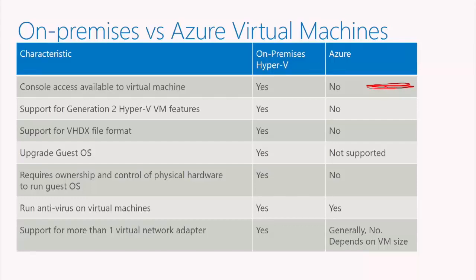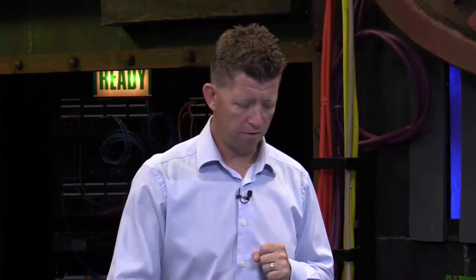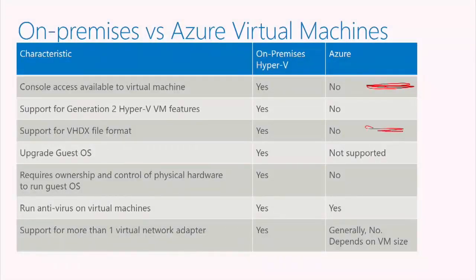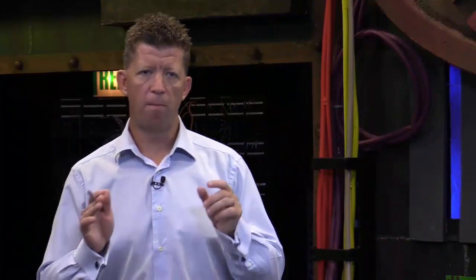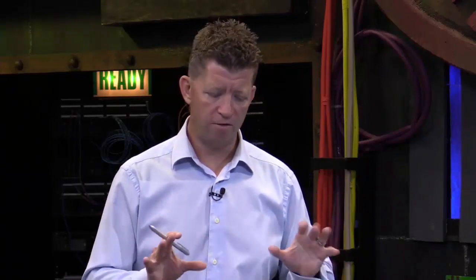If you're creating a virtual machine on Hyper-V, it has to be generation one or it cannot migrate to Azure. If you require a generation two virtual machine, Hyper-V is going to be your solution. Azure does not support the VHDX file format — though that's no big deal, since you can run a simple PowerShell command to convert any VHDX to VHD and upload it to Azure.